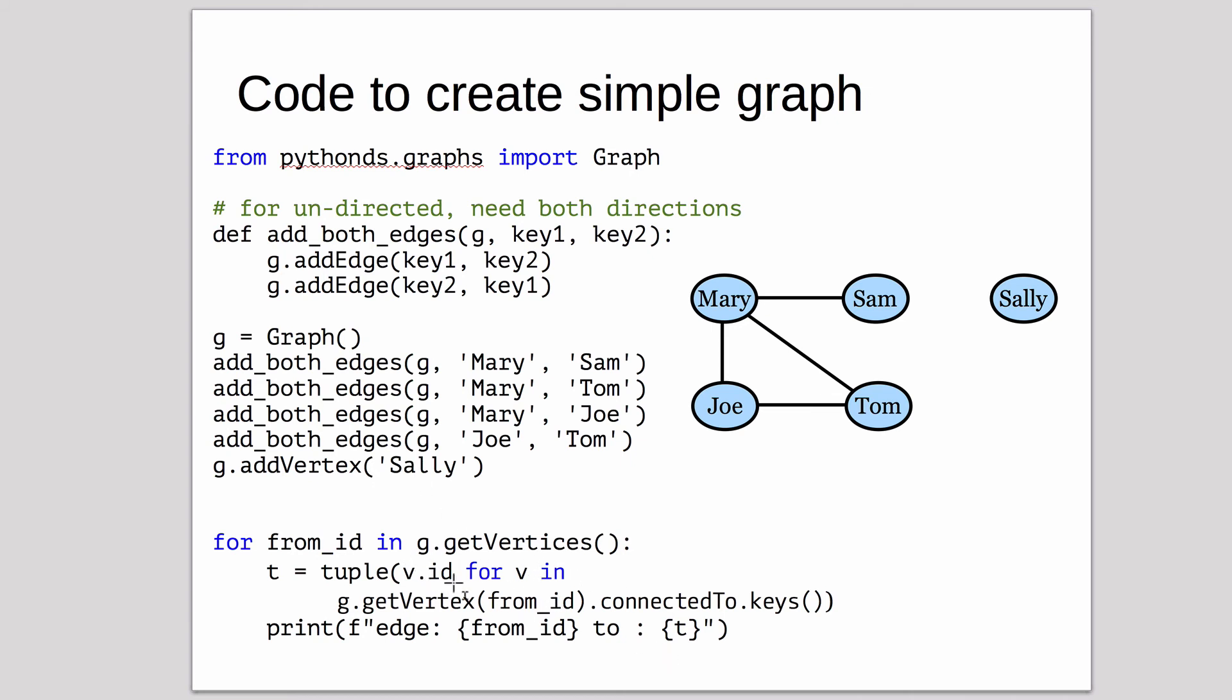Here's some code that will print out our finished graph. It goes through the IDs by calling get vertices on the graph. For each of those, it builds a tuple, which uses a list comprehension. It's actually a tuple comprehension in this case.